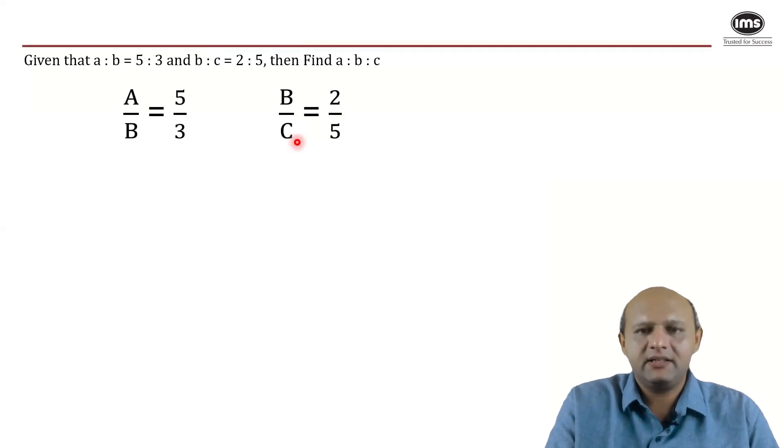a by b is 5 by 3. b by c is 2 by 5, right? So a is to b would be 5 is to 3 and b is to c would be 2 is to 5, correct?